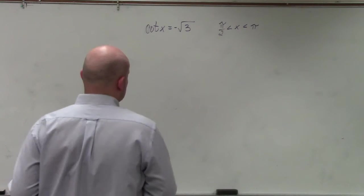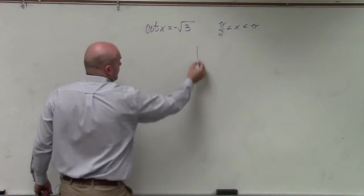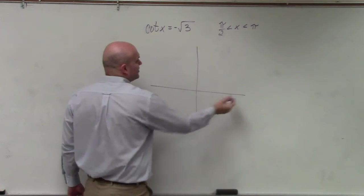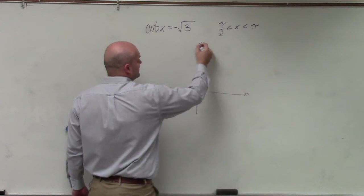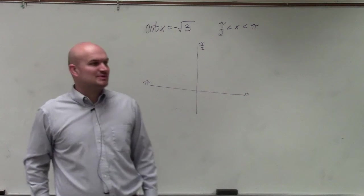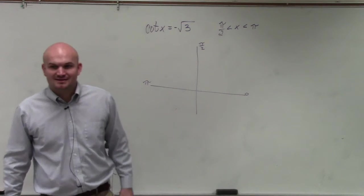Between pi-halves and pi, which quadrant is that? Well, if here's 0, here's pi, this would be pi-halves. So the quadrant between pi-halves and pi is second quadrant.